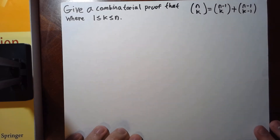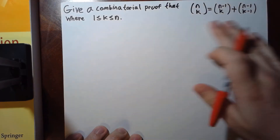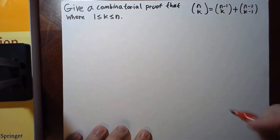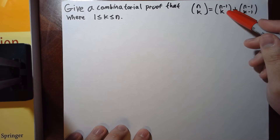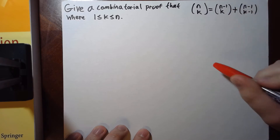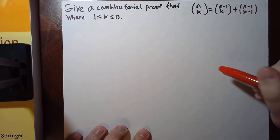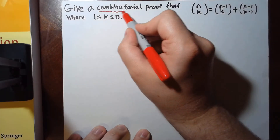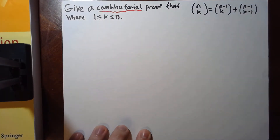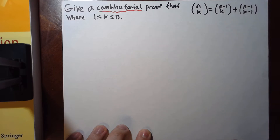I am going to attempt to solve the following problem. It asks to give a combinatorial proof that n choose k is equal to n minus 1 choose k plus n minus 1 choose k minus 1. The key here is we want a combinatorial proof. That means we're going to pick a set and count it in two different ways. One way will give the left-hand side, the other way will give the right-hand side.